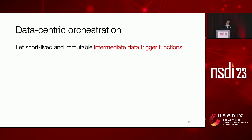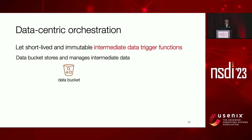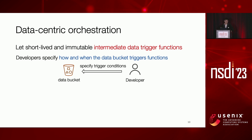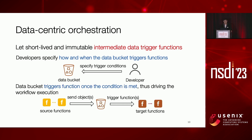Following this insight, we propose data-centric function orchestration. In this approach, we let intermediate data in the workflow trigger functions. We notice that intermediate data during workflow execution are typically short-lived and immutable — once generated, they are just waiting to be consumed by downstream functions. So we let them trigger their target functions. In particular, we have an abstraction called the data bucket. The data bucket stores and manages intermediate data. Users can specify trigger conditions on the data buckets — how and when the data bucket triggers downstream functions. Functions send intermediate objects to the bucket, and once trigger conditions are met, the bucket triggers the target function. Multiple data buckets work together to drive the workflow execution. Since intermediate data is typically immutable, there are no consistency issues.